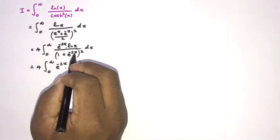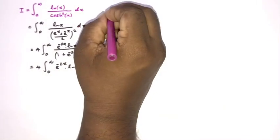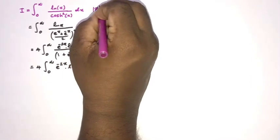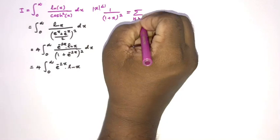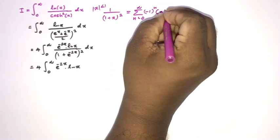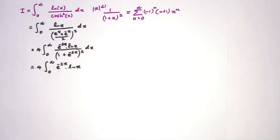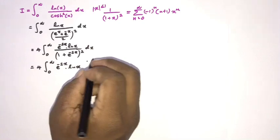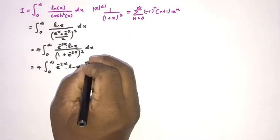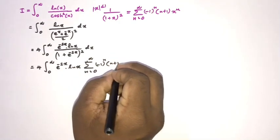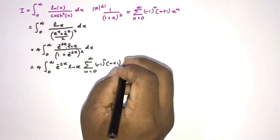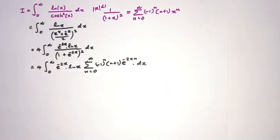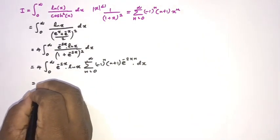We use the power series 1/(1+x)² = Σ(n=0 to ∞) (−1)ⁿ(n+1)xⁿ, valid for |x| < 1. Plugging in x = e^(−2x), we get Σ(n=0 to ∞) (−1)ⁿ(n+1) e^(−2nx). We then switch the integral and summation signs, writing the integral as 4 times the infinite sum.